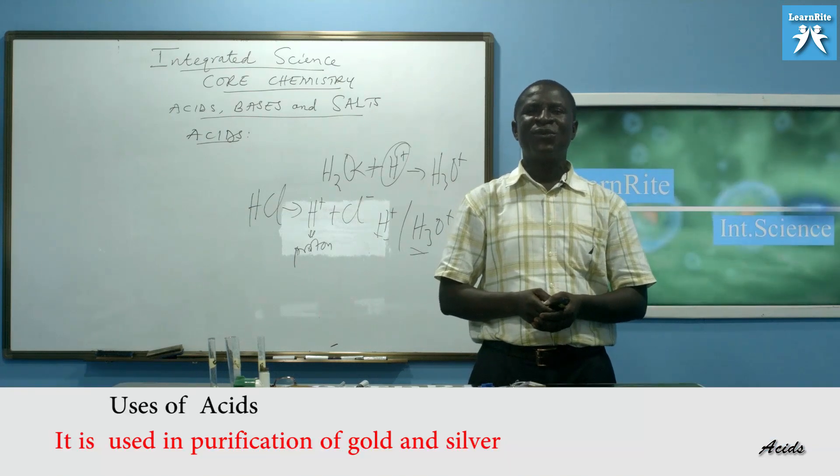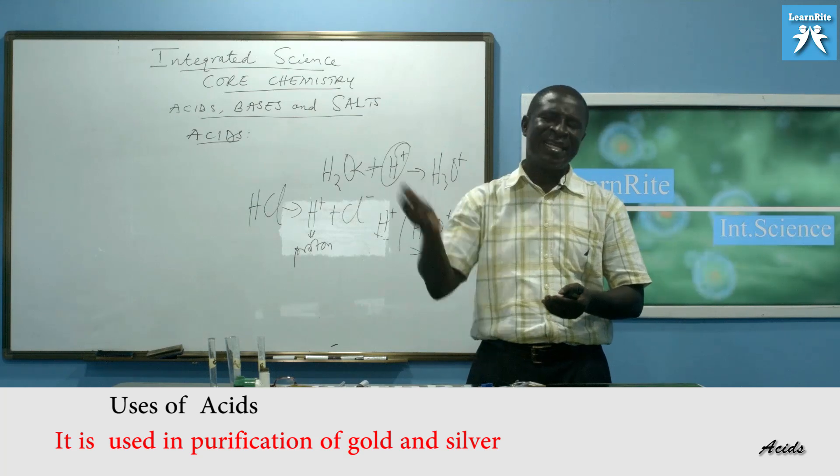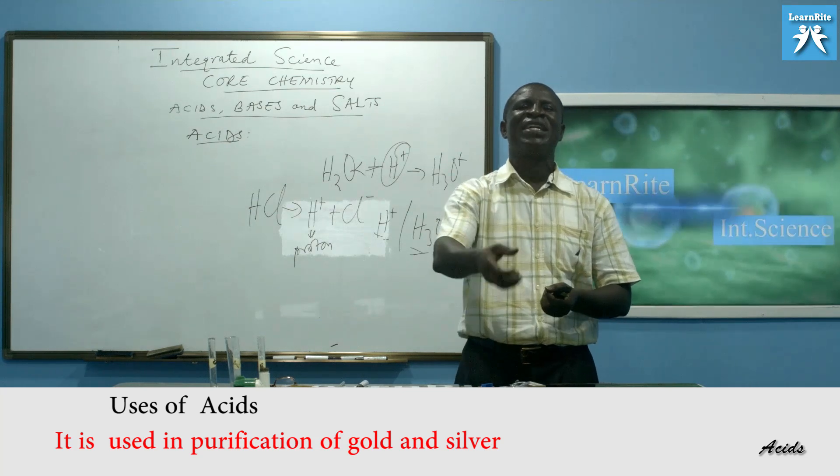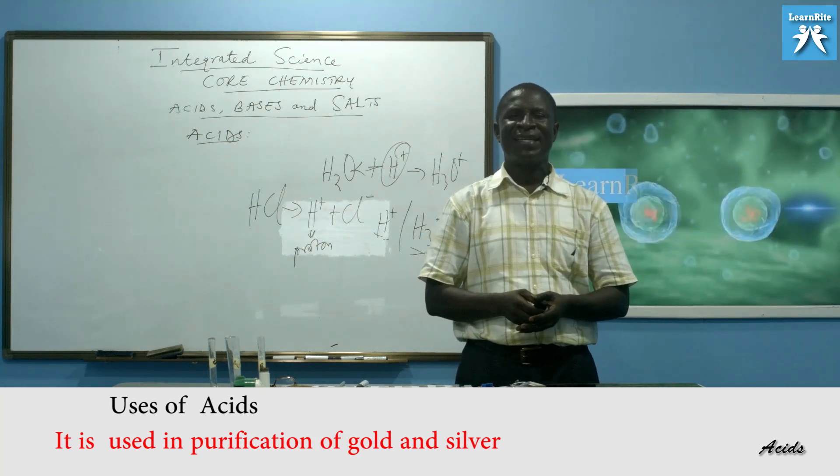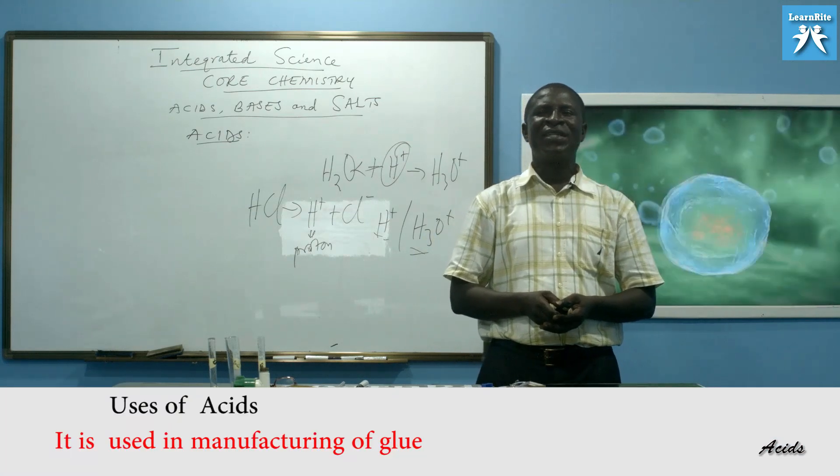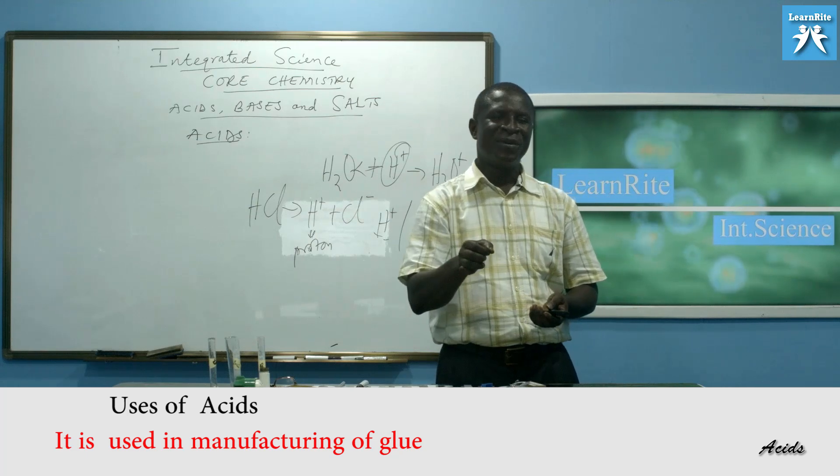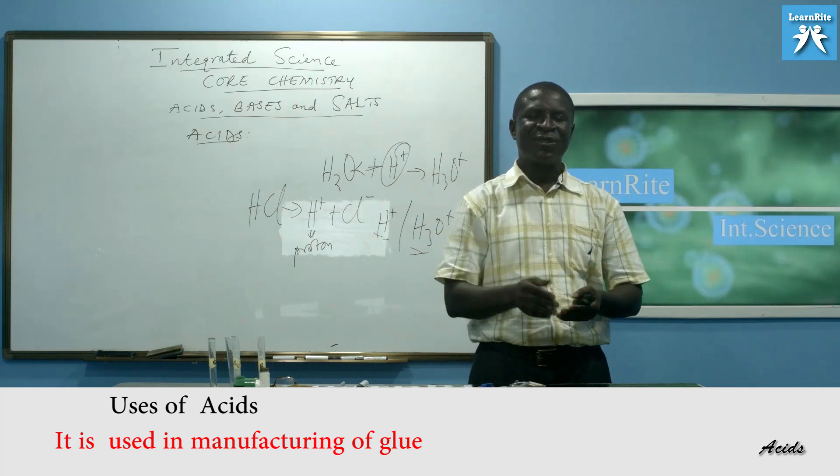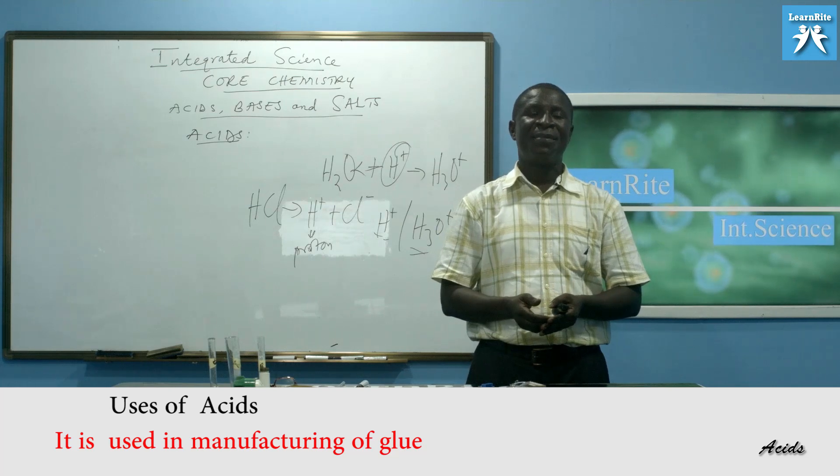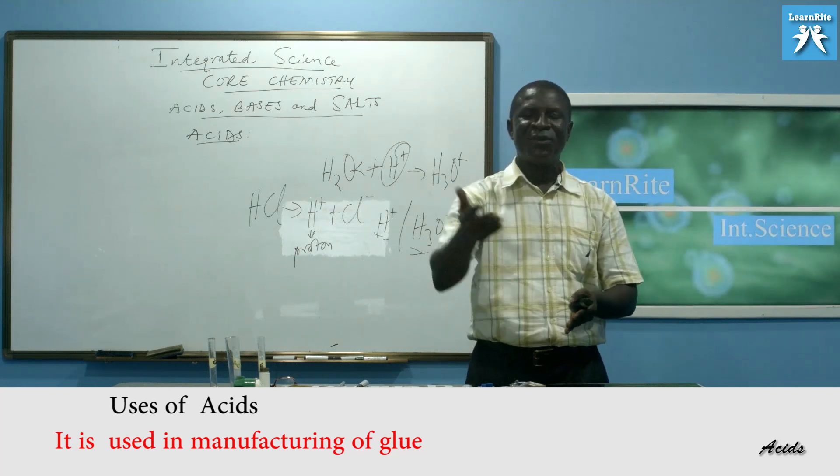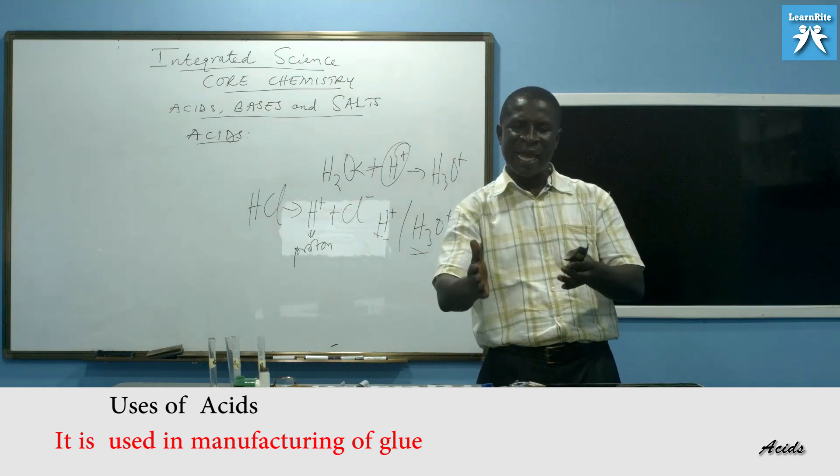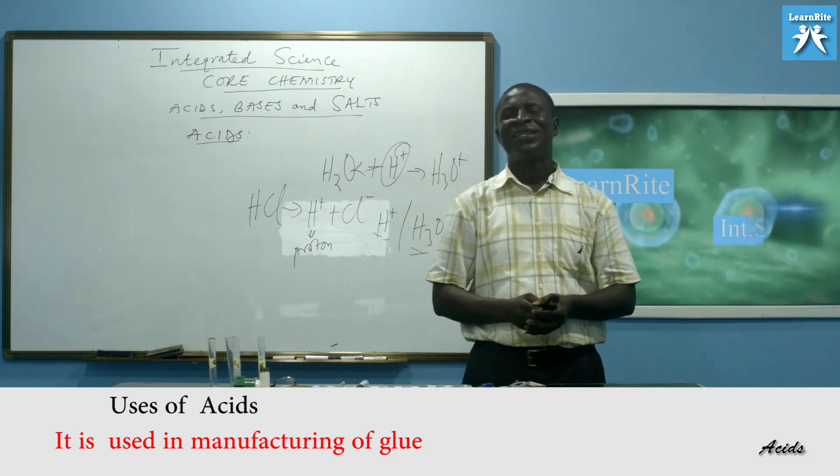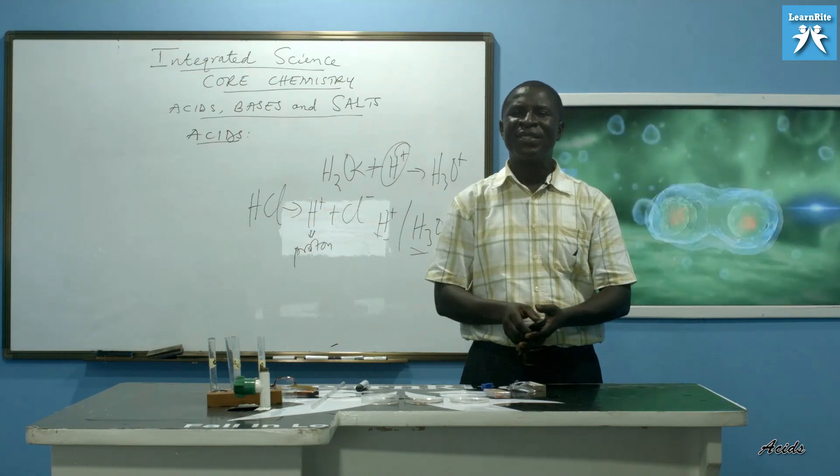Then, number four. It is used in purification of gold and silver. If you visit the mining areas, in purifying gold, acid is used. After the gold has been extracted, they use it to purify that. Then, the last one. It is used in the manufacture of glue. We all know glue. Glue to bind two surfaces together. Acid is also used. So, we have types of glue on the market. Some glue faster. Some glue also takes time. You leave it in the air before you join the two surfaces together. And it is held very strong. So, these are the uses of acid.